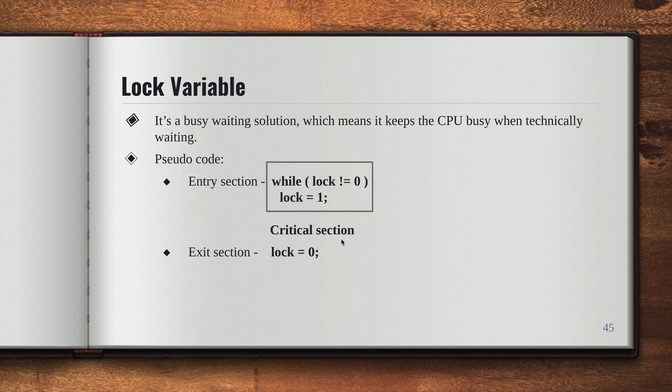So I hope it is clear what a lock variable is and how it solves the problem of the critical section. Thank you.